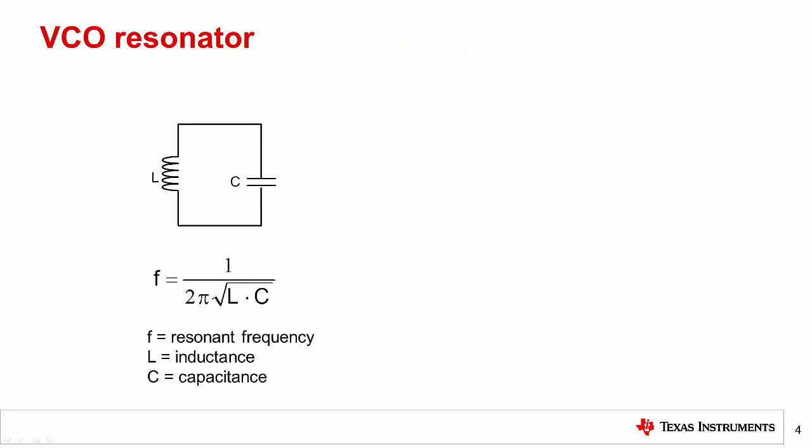The VCO contains a resonant or tank circuit that can be thought of as an electronic spring. When the voltage across the capacitor is maximum, the current in the inductor is minimum, and vice versa. Assuming no parasitic resistances, the circuit would go on forever. But wouldn't that be nice?